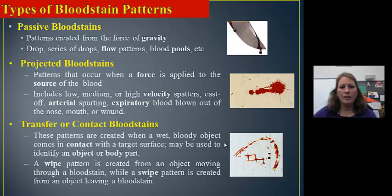There are different types of patterns, depending on the weapon and the method. Anything that's passive is due to gravity—these are drops off of a weapon, any kind of flow pattern from a wound, or anything that pools. A projected blood stain has a particular force applied, and they will say that's low, medium, or high-velocity spatters, depending on the force that's placed behind it. Then you can also have a transfer or a contact. This would be if a weapon or if someone walks through, if it's wiped, then it would be categorized as this.